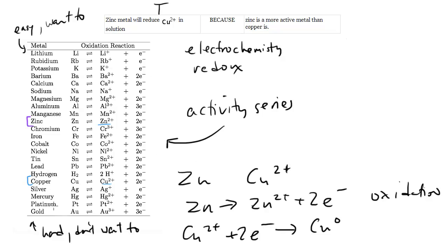The activity series is not something you generally need to memorize, so this question is kind of tough. I think I would just remember this main case, that zinc is always going to oxidize copper.